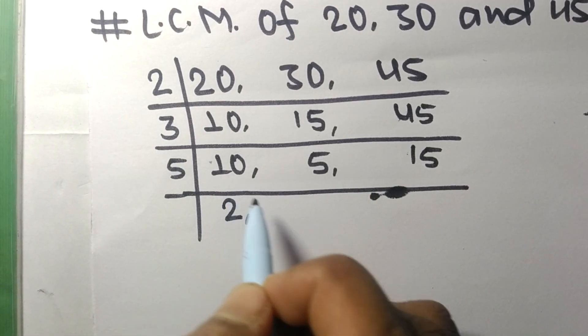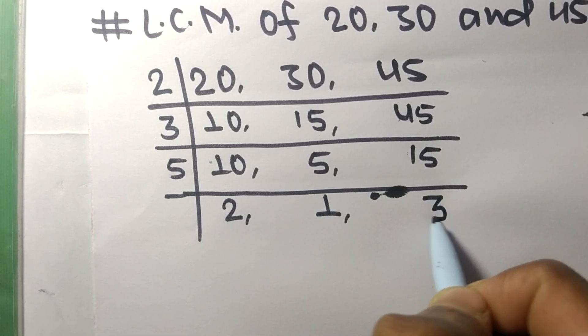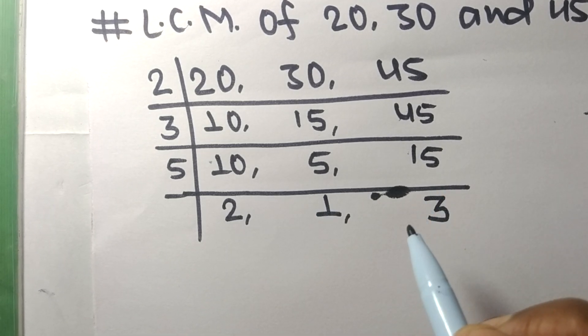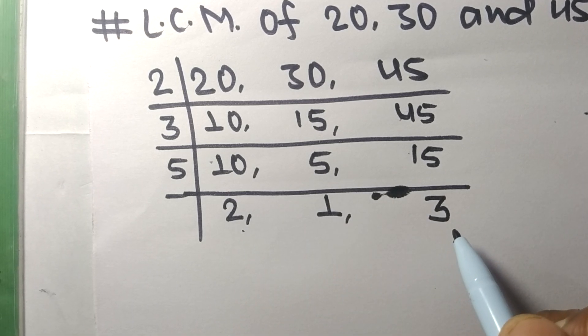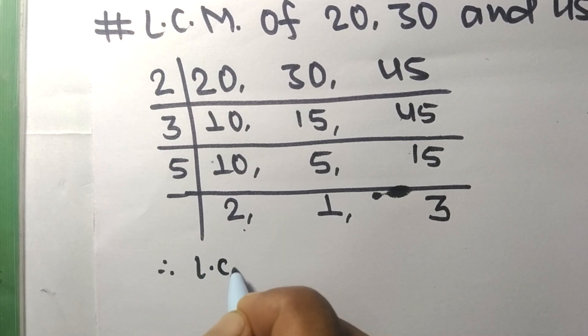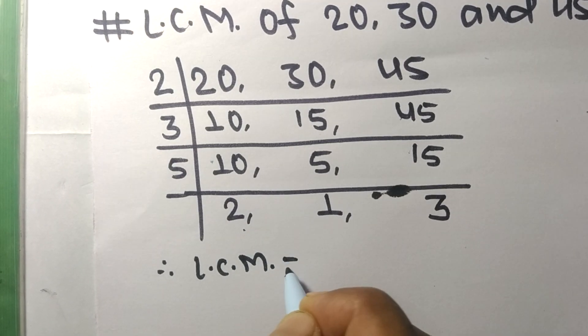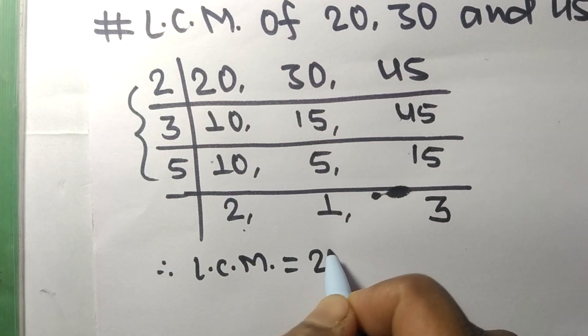5 times 2 equals 10, 5 times 1 equals 5, and 5 times 3 equals 15. Now the numbers 2, 1, and 3 are not divisible by the same number. Therefore, the LCM is equal to, from this side it is...